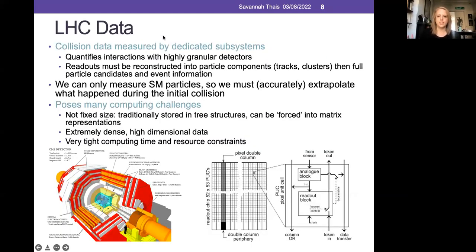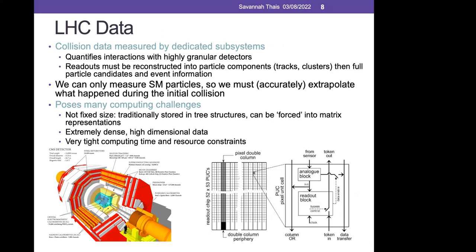The data from these collisions is measured by detectors with dedicated subsystems. As particles move outward from the interaction point, they interact with different materials in the detector, depositing different amounts of energy in different components. That energy is read out electronically, and those readouts must be reconstructed into particle components like trajectories and energy deposit groups, which are further reconstructed into particle candidates. From this we can start to figure out the full physics picture of what happened at the proton-proton collision.